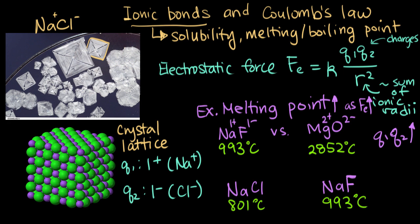Q1 times Q2 didn't change for these two compounds, but since we changed the anion from fluoride to chloride, we increased R here, and increasing R in the denominator makes the electrostatic force go down. Another way we could put it is that since R decreases as we go from sodium chloride to sodium fluoride, the melting point goes up.